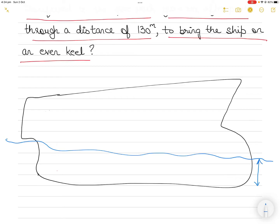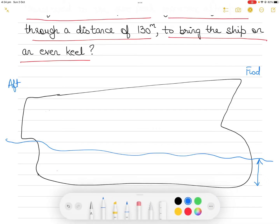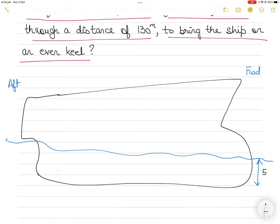What is given is the forward draft. This is the forward part of the vessel and this is the aft part of the vessel. The forward draft is 5.6 meters and 6.2 meters is the aft draft, so the vessel is trimmed by stern. We draw the midship and call it H, so H is the midship.